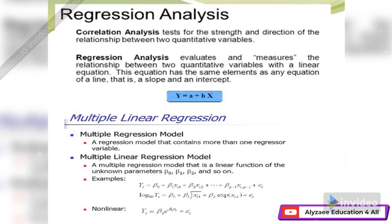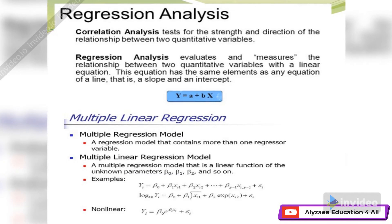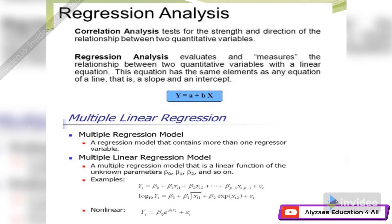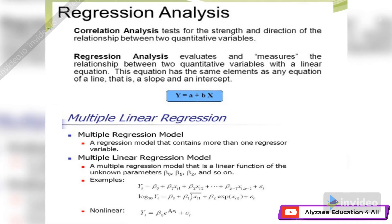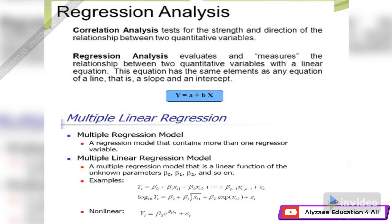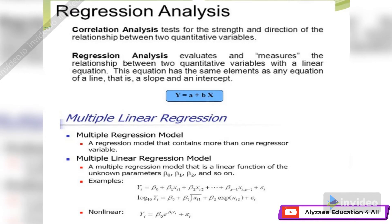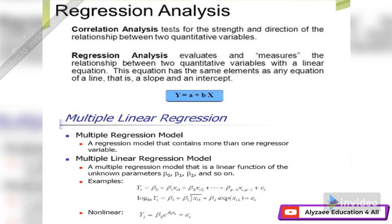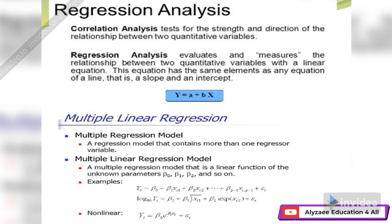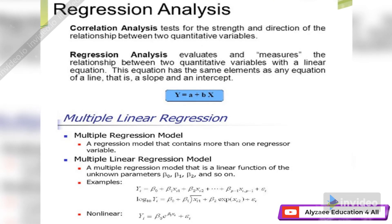For going into detail we must know two concepts: correlation analysis and regression analysis. What is correlation analysis? It is the test for the strength and direction of a relationship between two quantitative variables. Whereas regression analysis evaluates and measures the relationship between two quantitative variables. The regression analysis model uses a linear equation — that is, an equation of a line with a slope and an intercept.